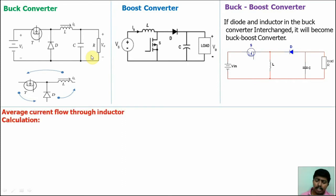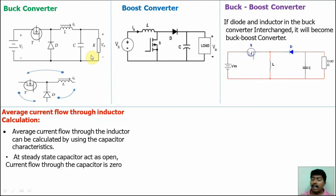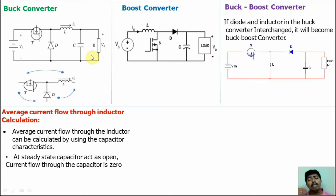The average current flow through the inductor can be easily calculated by using the capacitor characteristics. Under steady state condition, the capacitors act as open. That means when the switch position changes from one position to another, after a long time — steady state condition — the capacitors act as open, and there is no current flow through the capacitors. That means maximum voltage will be charged.